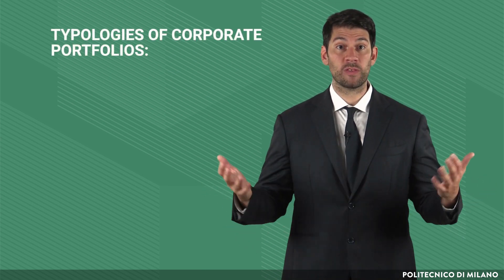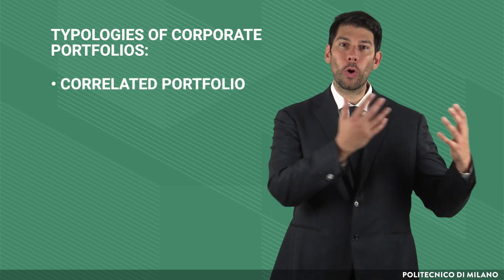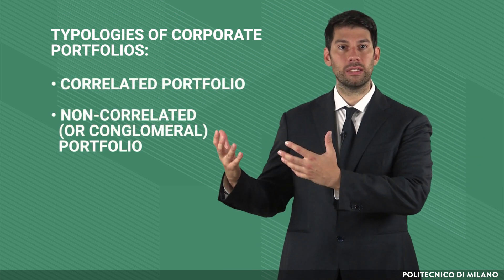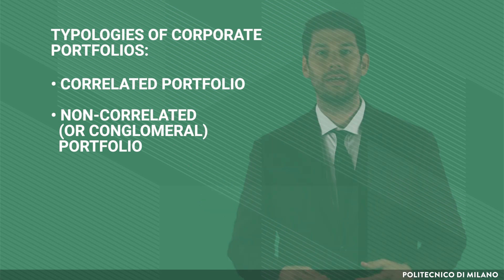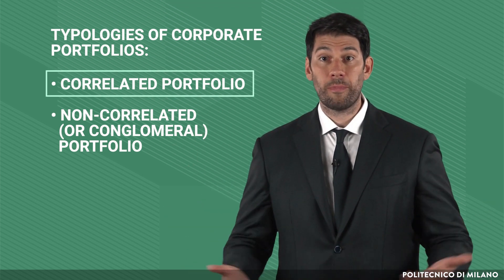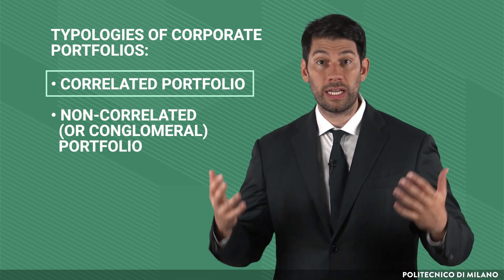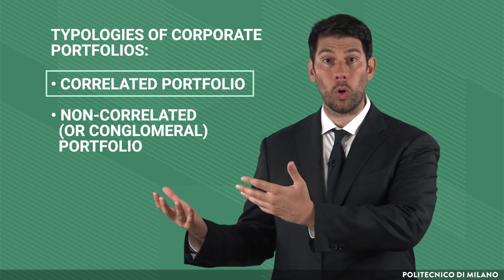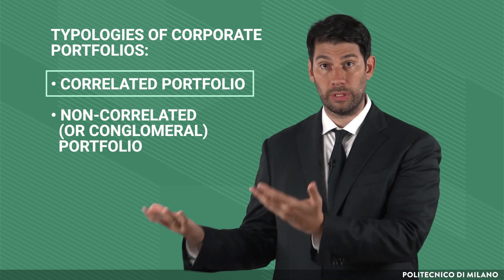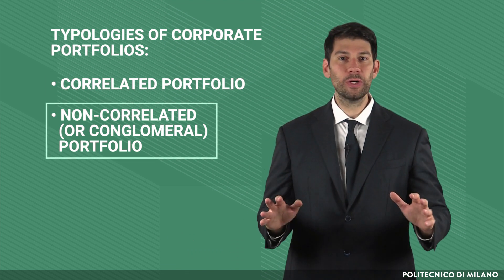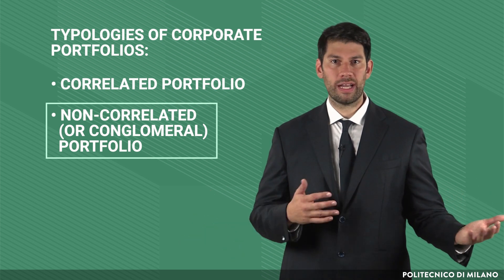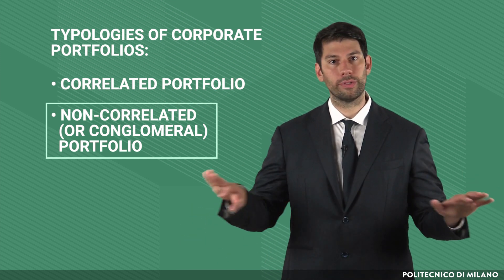Basically, two main typologies of business portfolios exist: a correlated portfolio and a non-correlated or conglomeral portfolio. In a correlated portfolio, the business areas show similarities in the customer needs satisfied, and the products and services sold are operationally related. In a non-correlated portfolio, such correlation becomes blurred, and products and services offered are apparently unrelated.